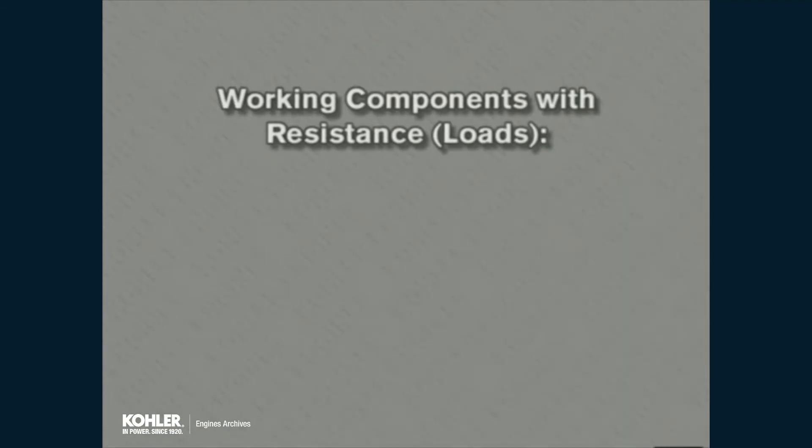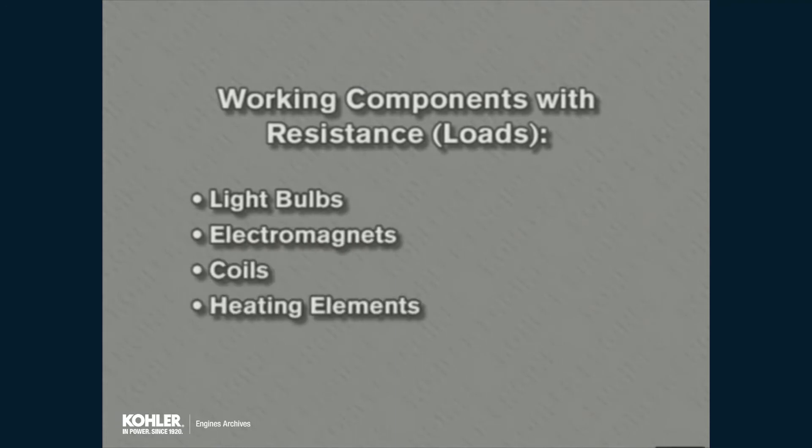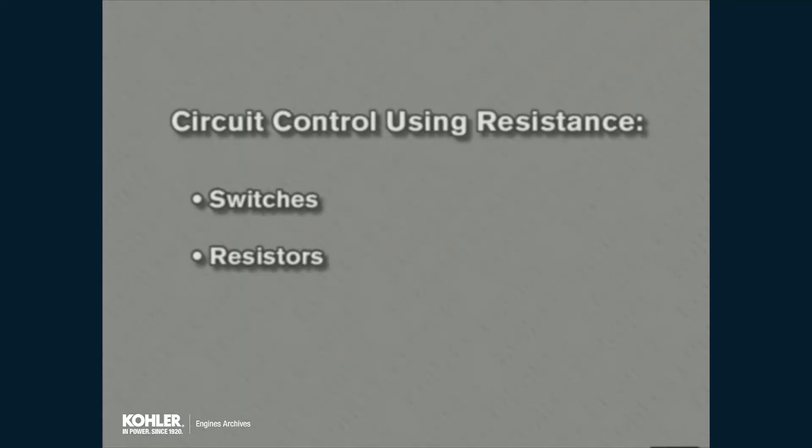Components in a circuit which do work have resistance. Examples are light bulbs, electromagnets, coils, and heating elements. The resistance imposed by a working component is referred to as a load. Other components, such as switches and resistors, use resistance to control the circuit. These are examples of conditions where resistance is desirable and put to use.